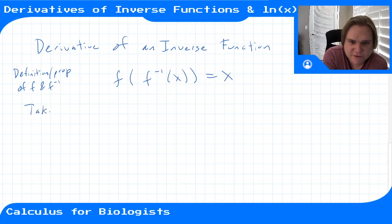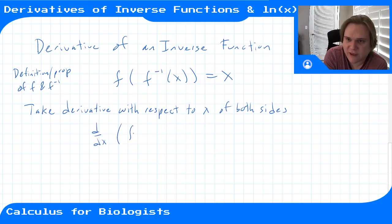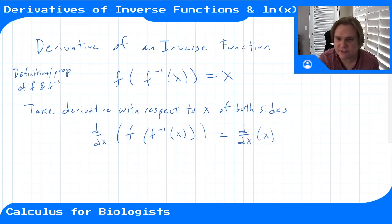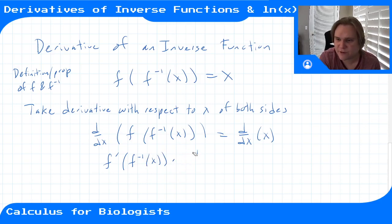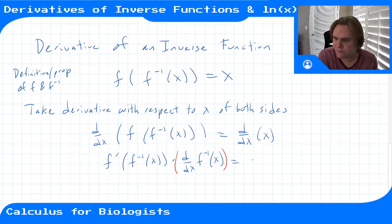If I take the derivative with respect to x of both sides, on the left I apply the chain rule, so I get f prime of f inverse of x times the derivative of f inverse with respect to x. On the right, the derivative of x with respect to x is just 1.